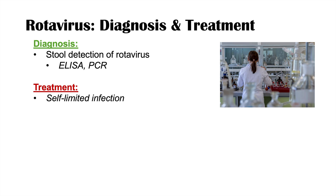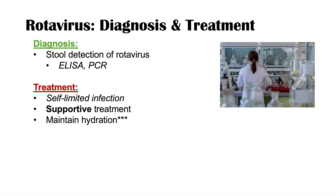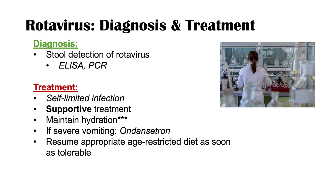Treatment of rotavirus is often supportive because it is a self-limited infection that will typically resolve on its own. The main goal is maintaining hydration, as patients can become severely dehydrated. If there is severe vomiting, ondansetron can be used to reduce nausea. Clinicians will also promote resuming an age-appropriate diet as soon as it is tolerable.